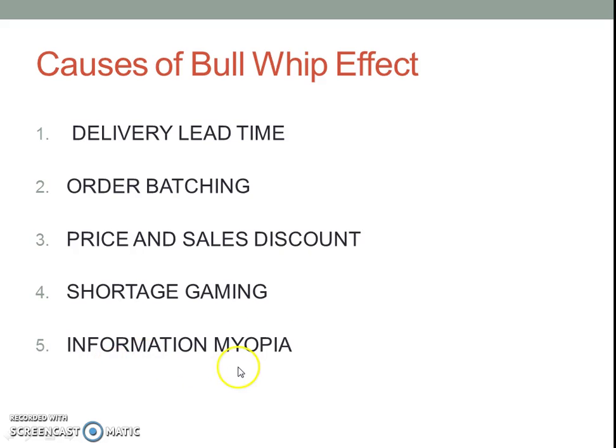Fifth is Information Myopia. In traditional supply chain, the source of information to any firm in the supply chain is limited to the firm immediately downstream of it in the supply chain. They have no access to the actual customer demand that drives the supply chain. This limited access to information is another cause of aggravation of Bullwhip Effect.